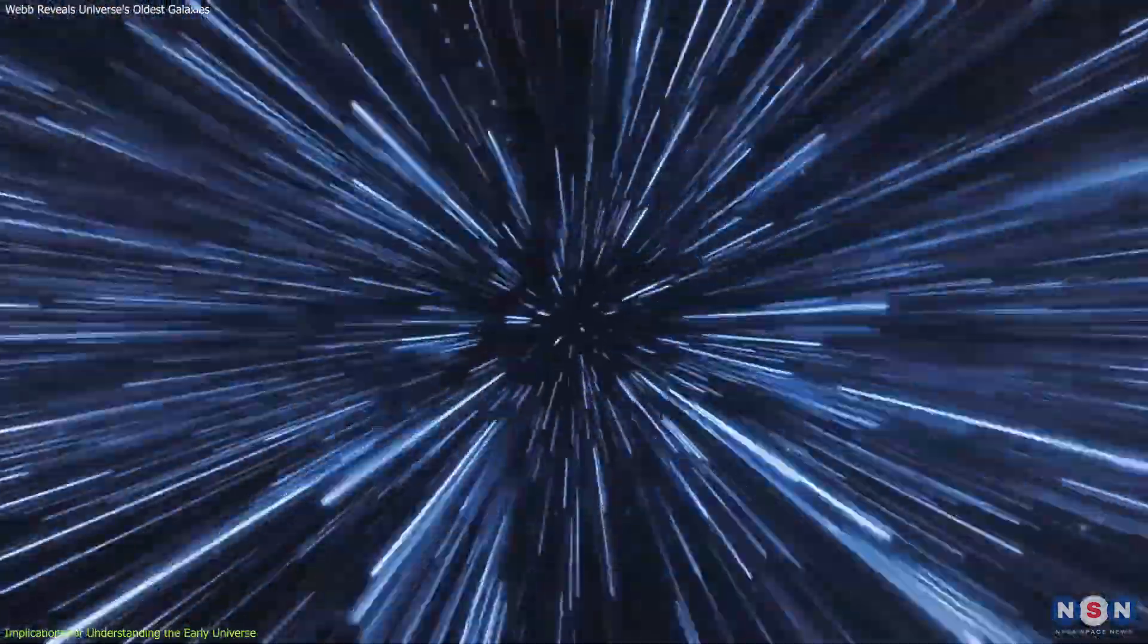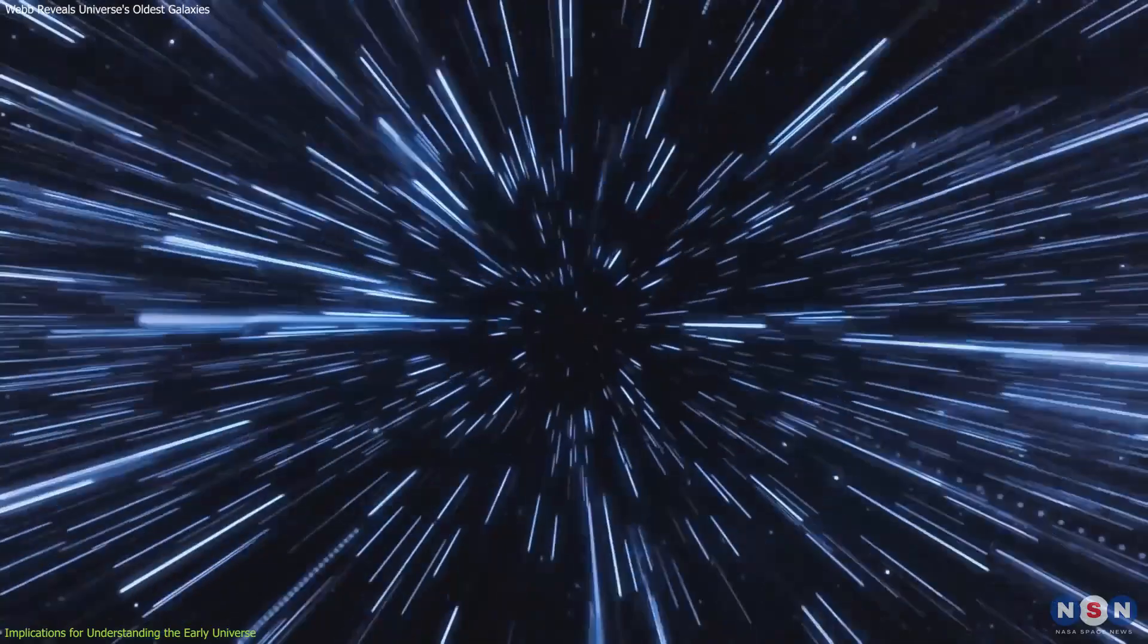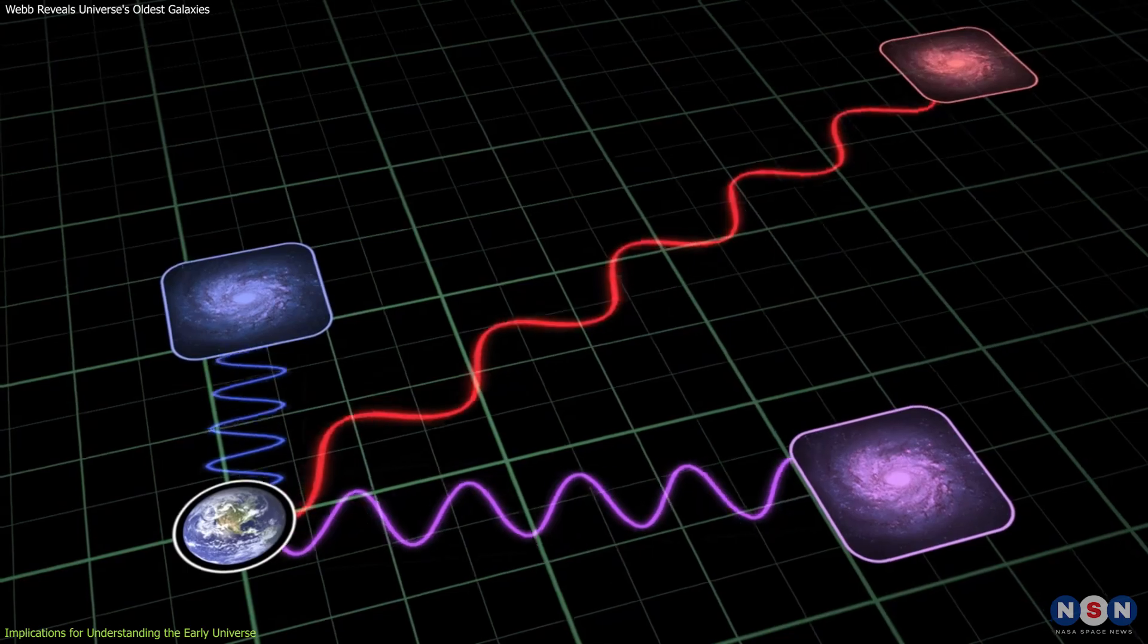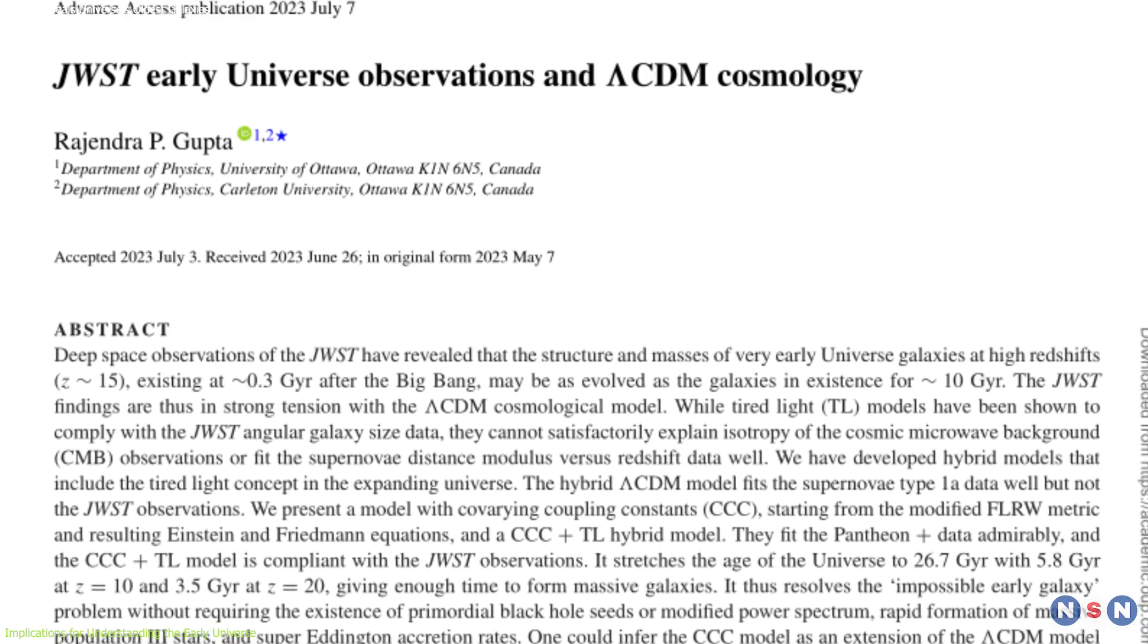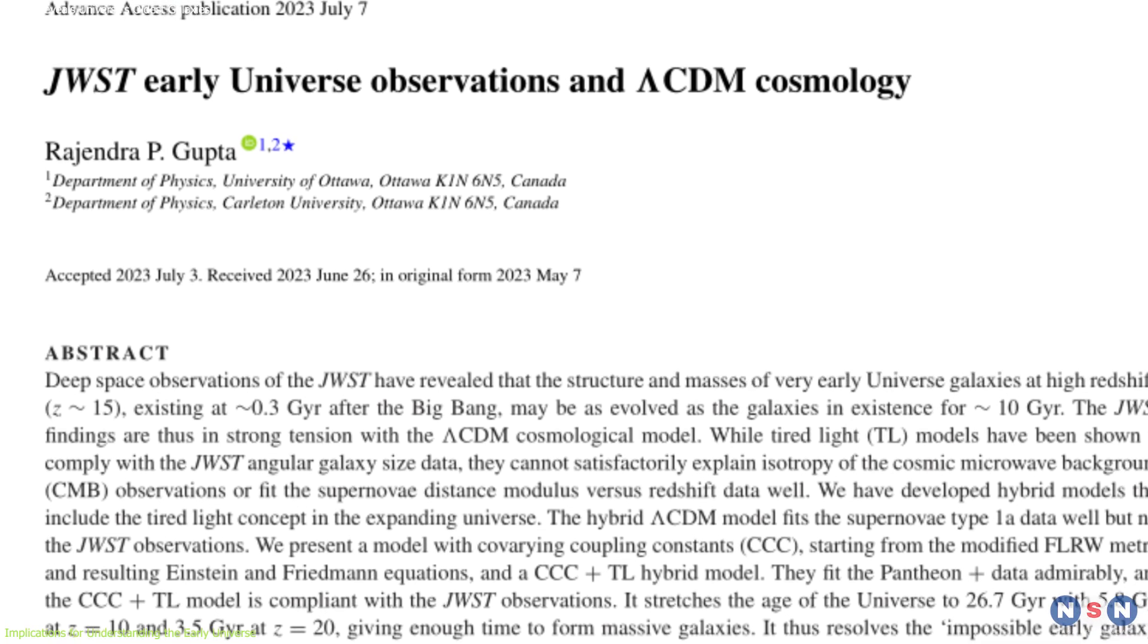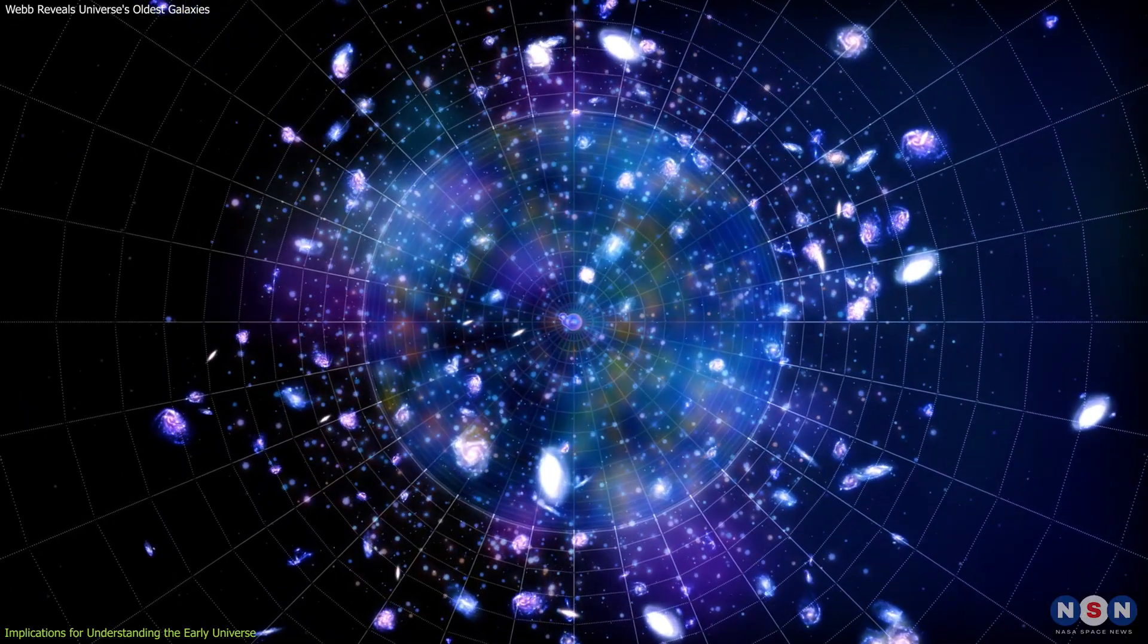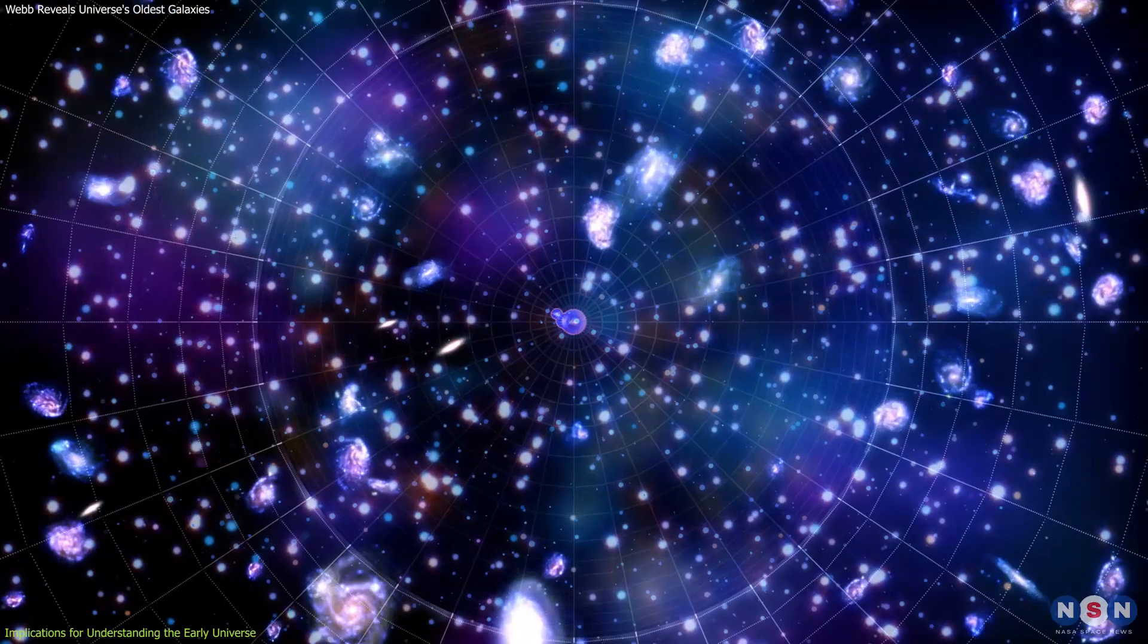Gupta's theory, incorporating the tired light hypothesis, suggests that photons gradually lose energy over cosmic distances, contributing to redshift. This theory, coupled with introducing new physical constants that evolve over time, proposes a much older universe, accommodating the existence of early galaxies.